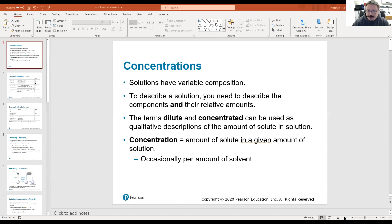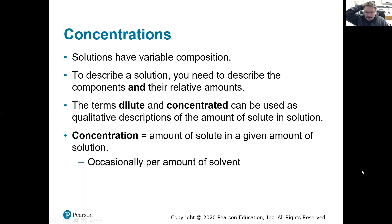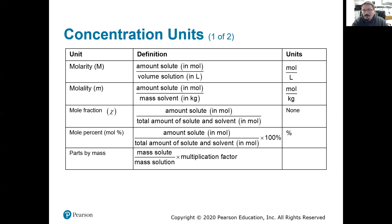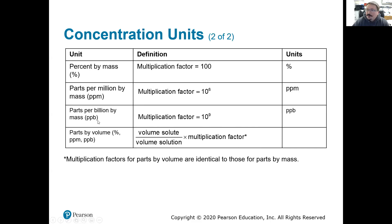You've heard of some solution concentrations already from Chem 1. Probably the most common one you've seen was molarity. We're going to look at two new terms: dilute and concentrated. A concentrated solution is when we have a large quantity of solute, and dilute is when the concentration is very small. We're also going to look at molality, mole fraction, percentage, parts per million, and parts per billion — things you may have heard of but not worked with.